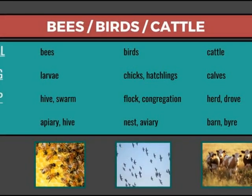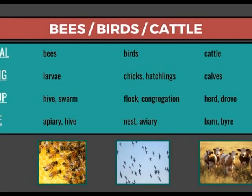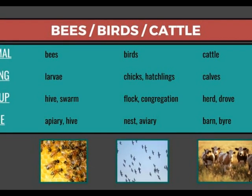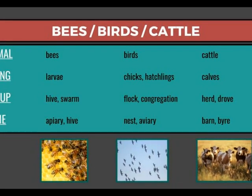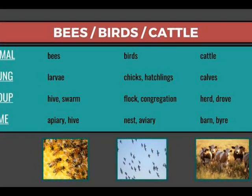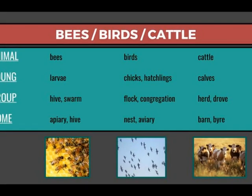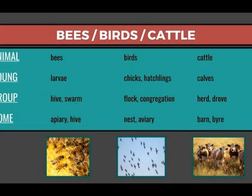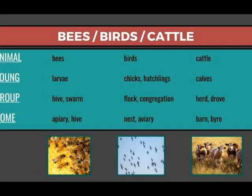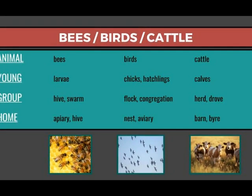The young of bees are larvae. A group of bees is a hive or swarm. The home of bees is an apiary or hive. The young of birds are chicks or hatchlings. A group of birds is a flock or congregation. The home of birds is a nest or aviary.